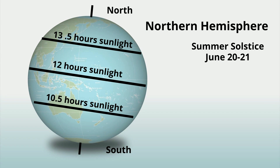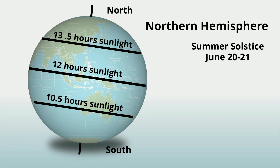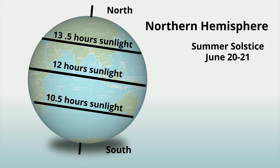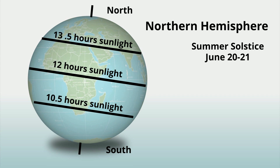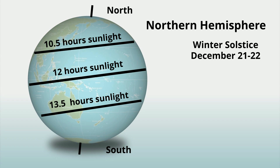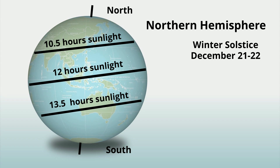The day of the solstice in either hemisphere has either the most sunlight of the year, which is called the summer solstice, or the least sunlight of the year, which is the winter solstice — except at the equator.